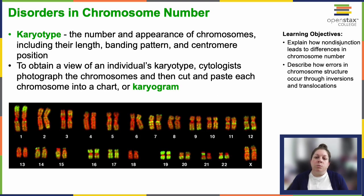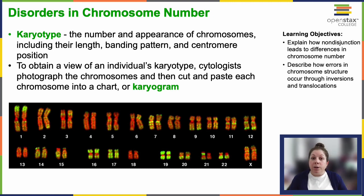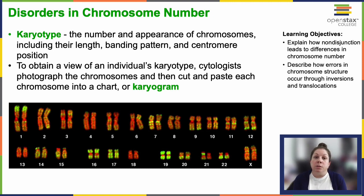Chromosome disorders are primarily identified through cytogenetics, which involves isolating and microscopically observing the chromosomes. A karyotype, which details chromosome number, appearance, length, banding pattern, and centromere position, is the basis for detecting these abnormalities.